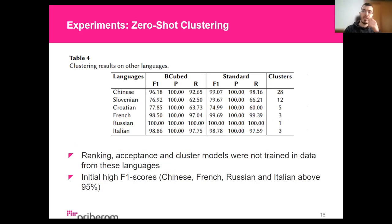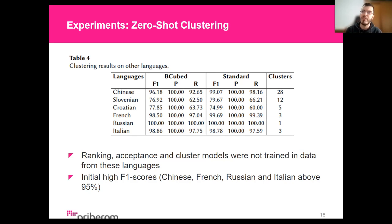Finally, we performed a zero-shot clustering evaluation using test data available from the dataset. No data from these documents was seen during training by our models, except for about 10 Chinese documents, and the system managed to achieve F1 scores over 95 points on most languages, with the exception of Croatian and Slovenian — which is a pretty good initial result considering we did not train on documents of those specific languages.